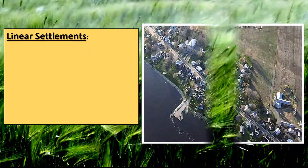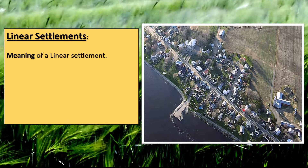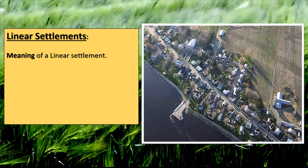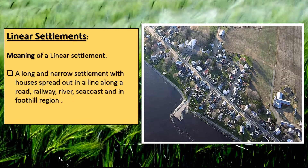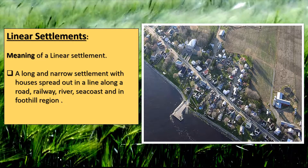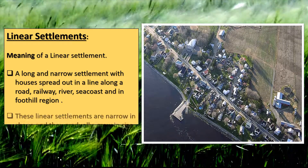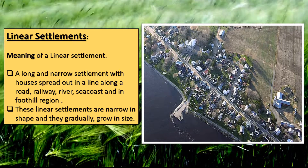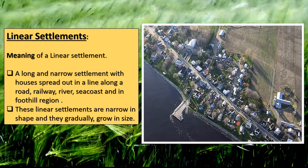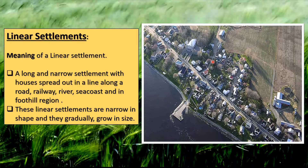A linear settlement is a long and narrow settlement with houses spread out in a line along a road, railway, river, sea coast, or in foothill regions. These settlements are narrow in shape and they gradually grow in size. In the picture shown, this settlement is along a road with houses arranged in a line.